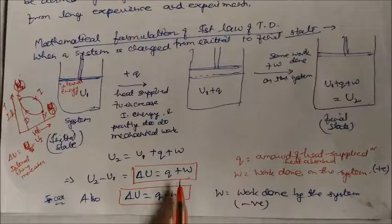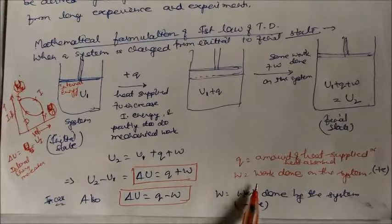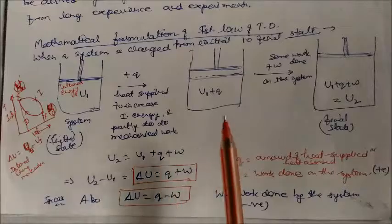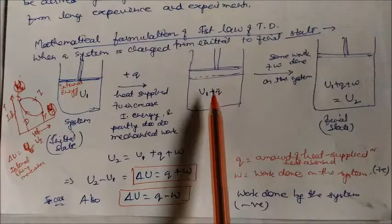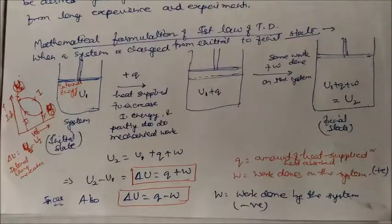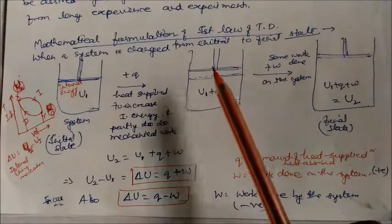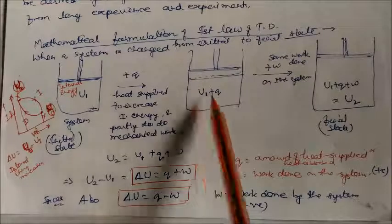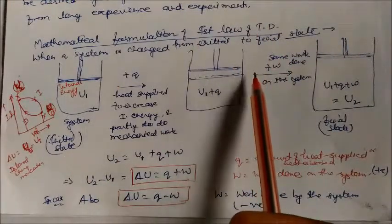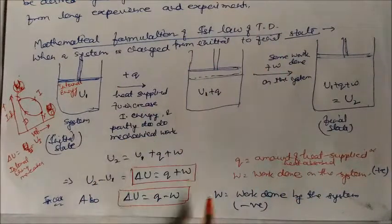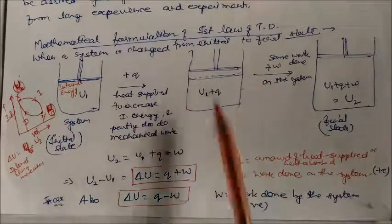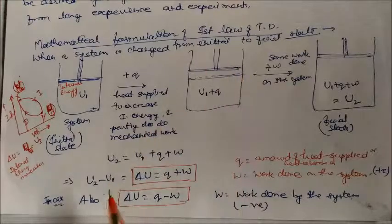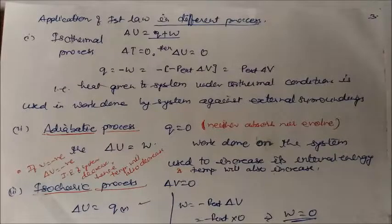Here, w is the work done on the system. On supplying energy, work may be done on the system or the system may do work on the surroundings — both possibilities exist. There are two cases: work done on the system (positive w) and work done by the system (negative w). Read each statement carefully.